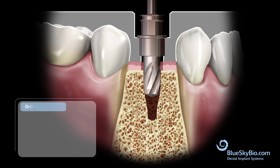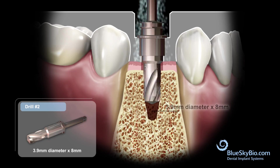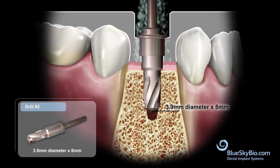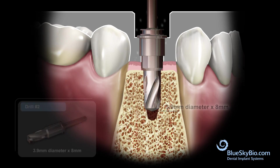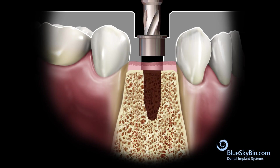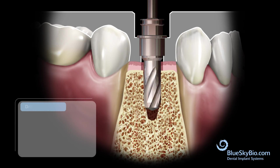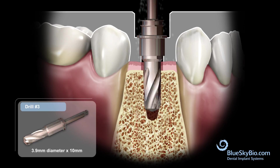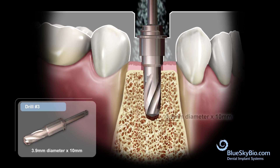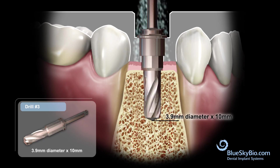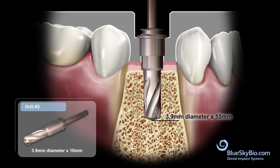Insert the 8 millimeter long drill with same diameter without spinning until it is centered by the master tube. Activate the drill and advance until stopped by the master tube. Insert the 10 millimeter long drill with same diameter without spinning until it is centered by the master tube. Activate the drill and advance until stopped by the master tube.